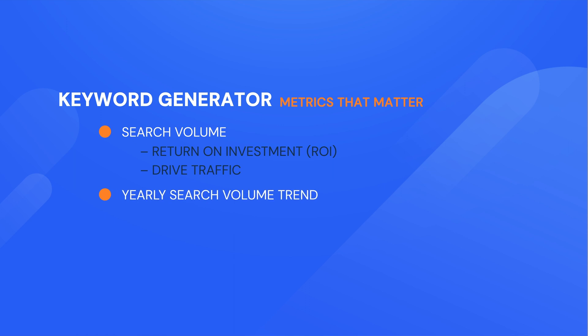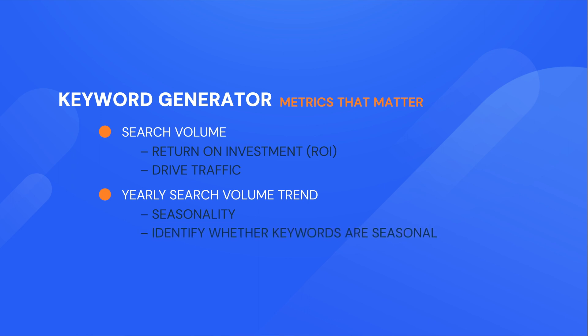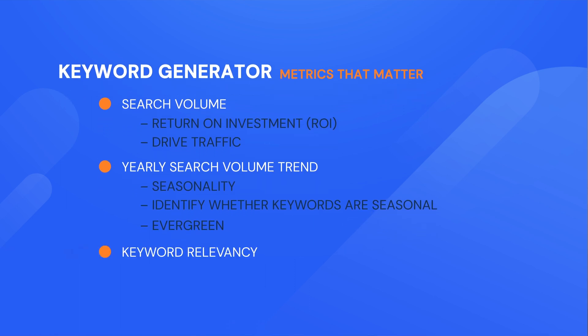You don't want to be optimizing and creating content — for example on Thanksgiving ideas in the United States — when that only happens once a year. As a result, that particular keyword will have a lot of seasonality to it. You want to be looking at yearly search volume trends to identify keywords that either have seasonality or don't. Keywords that have seasonality can be useful for particular campaigns, but keywords that don't have seasonality — otherwise called evergreen keywords — are keywords that are consistently searched for throughout the calendar year.